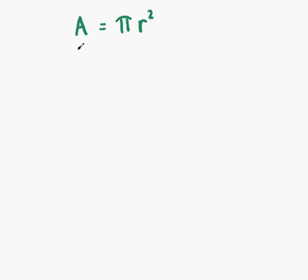At the end of our working, we should have r at the left-hand side — r equals, and then the rest of our formula. There are a couple of different ways to go about doing this. One way we can start is: since A equals pi r squared, we can also say that pi r squared is equal to A. That gets r onto the left-hand side where we want it to end up, but we still need r on its own and not squared.